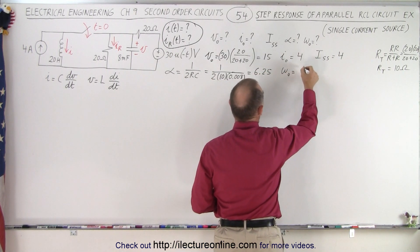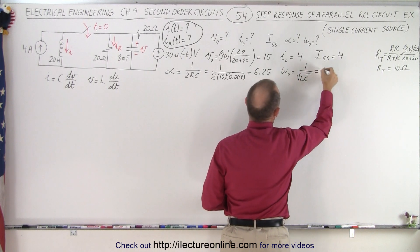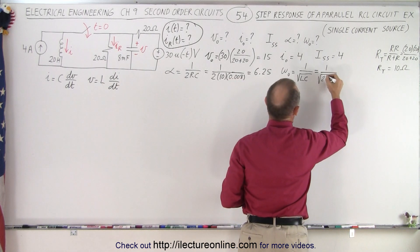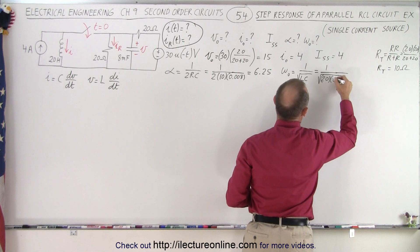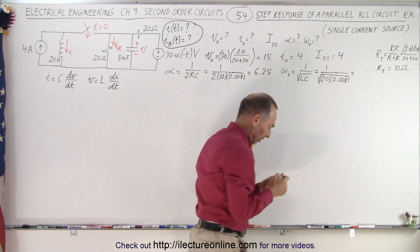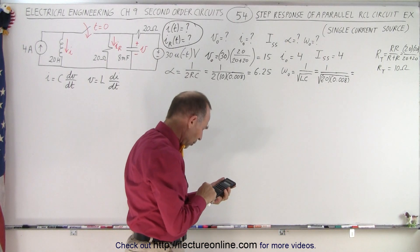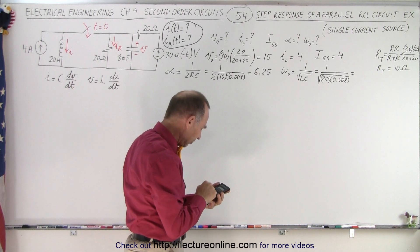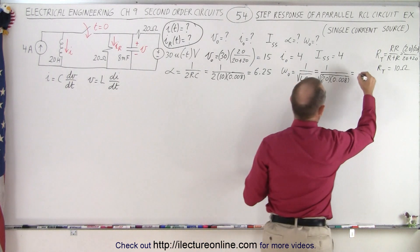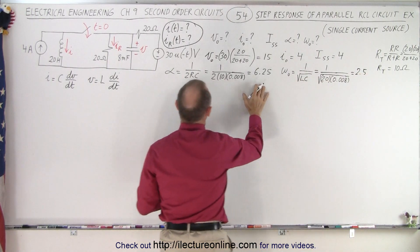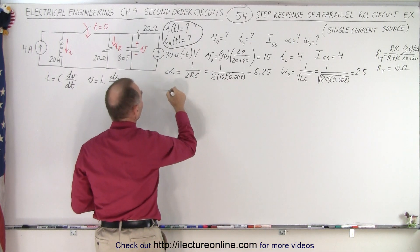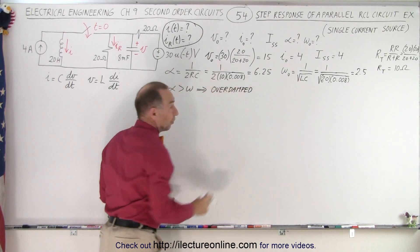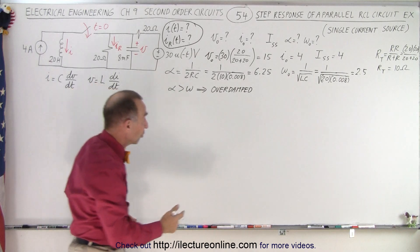The natural frequency of the circuit is 1 over the square root of LC, which is 1 over the square root of L — 20 Henrys — times 0.008 for the capacitor. Taking 0.008 times 20, the square root, then the inverse, we get 2.5. So alpha at 6.25 is larger than omega at 2.5, which implies we have an overdamped case.